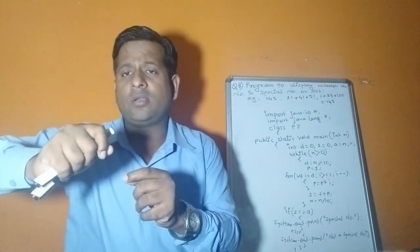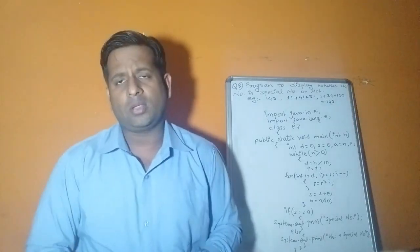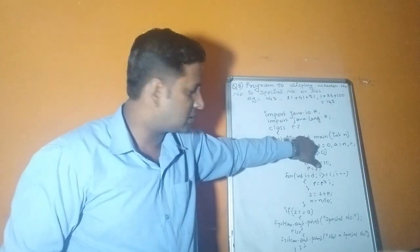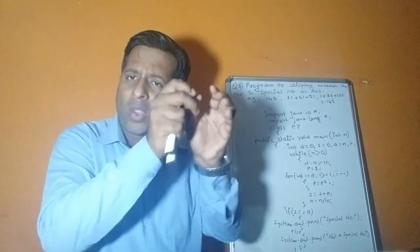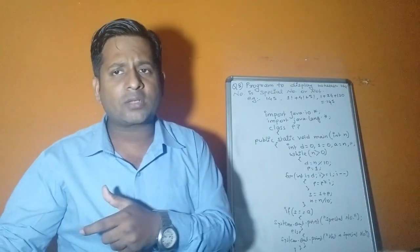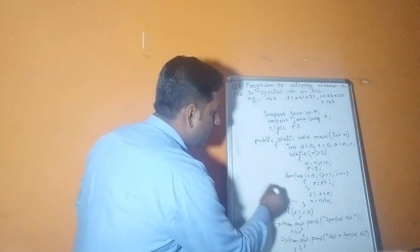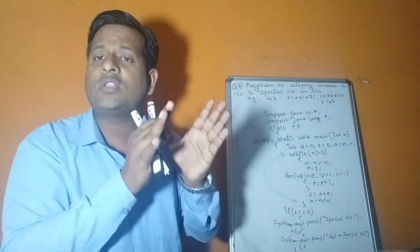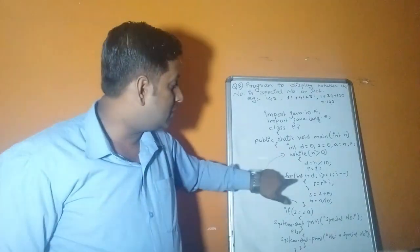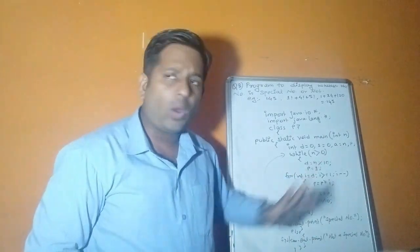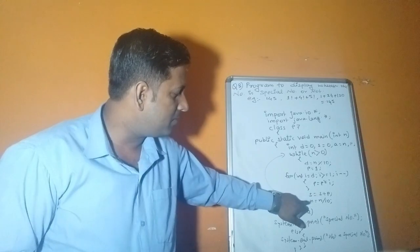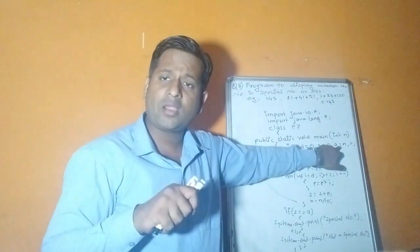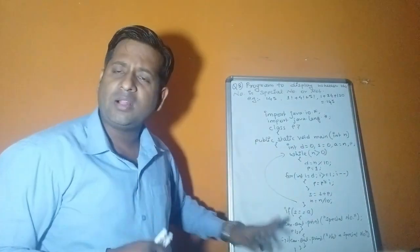We initialize p = 1 inside the while loop (after extracting each digit) so that for each individual digit the product starts fresh from 1. If p were initialized outside, the previous digit's product value would carry over. The for loop runs: i = d down to 1, multiplying p each time. The product is then added to the sum s. The number n is reduced. Finally, s is compared with the original number stored in a. If equal, print 'special number'; else 'not a special number'.